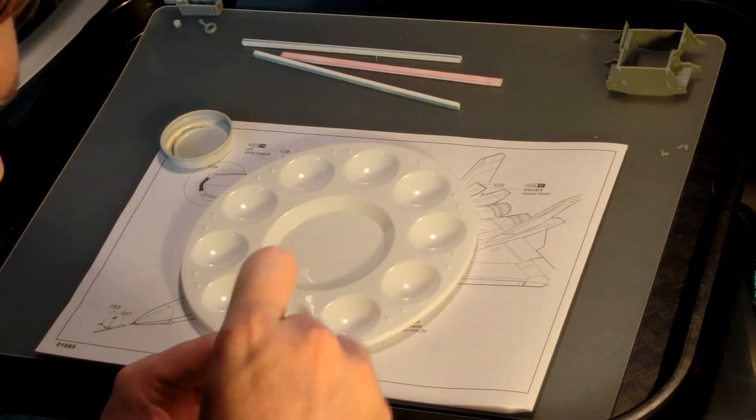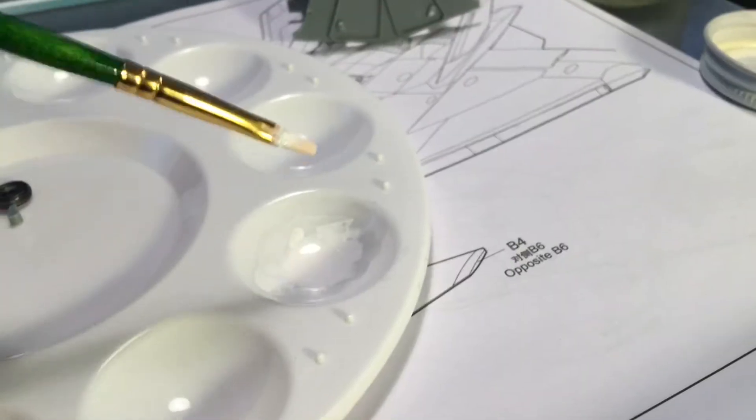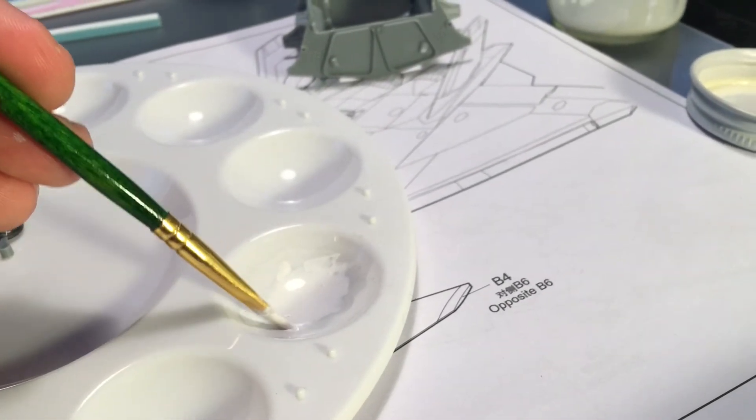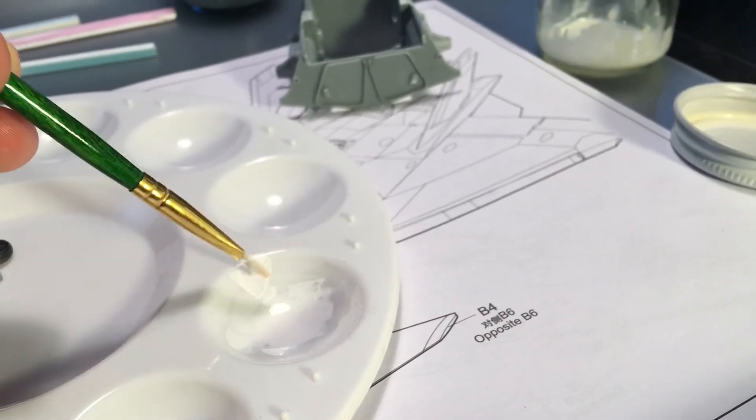Anyway, as you mix, you will see the paint start to thin out and flow more smoothly. The consistency when you finally bring paintbrush to model should look like this, not watery thin, but not thick and gloopy either.